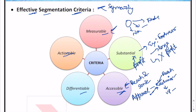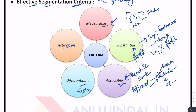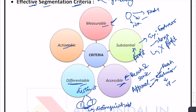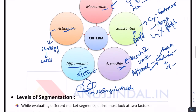Differentiable means segments should have distinct needs or differentiable characteristics — it should not happen that two segments have really similar needs, as there is no point segmenting them. Finally, actionable means the company should be able to formulate a strategy to cater to the needs of such segments; strategy formulation should not be overly difficult.